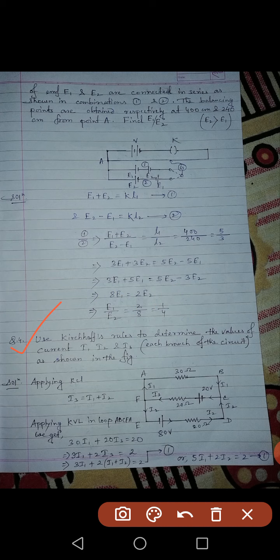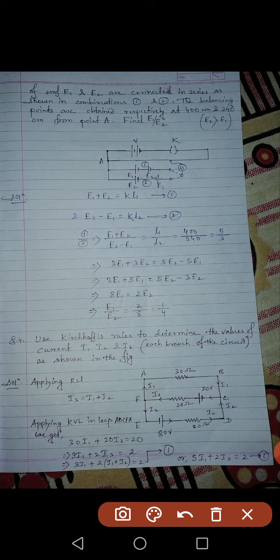The last question, number 4, is an application of Kirchhoff's law. Use Kirchhoff's rules to determine the values of current I1, I2, and I3 as shown in the figure. Sometimes the directions may not be mentioned in the figure, so you consider the direction of current by yourself — for example, current coming out of a cell splitting at a junction.